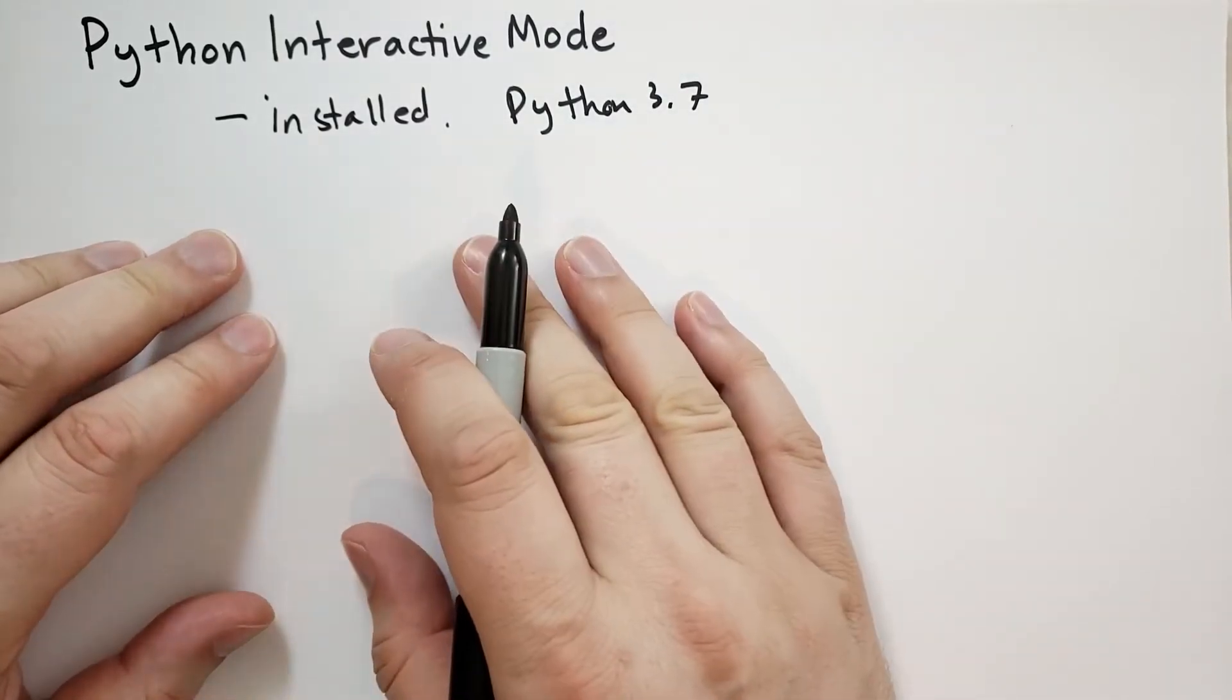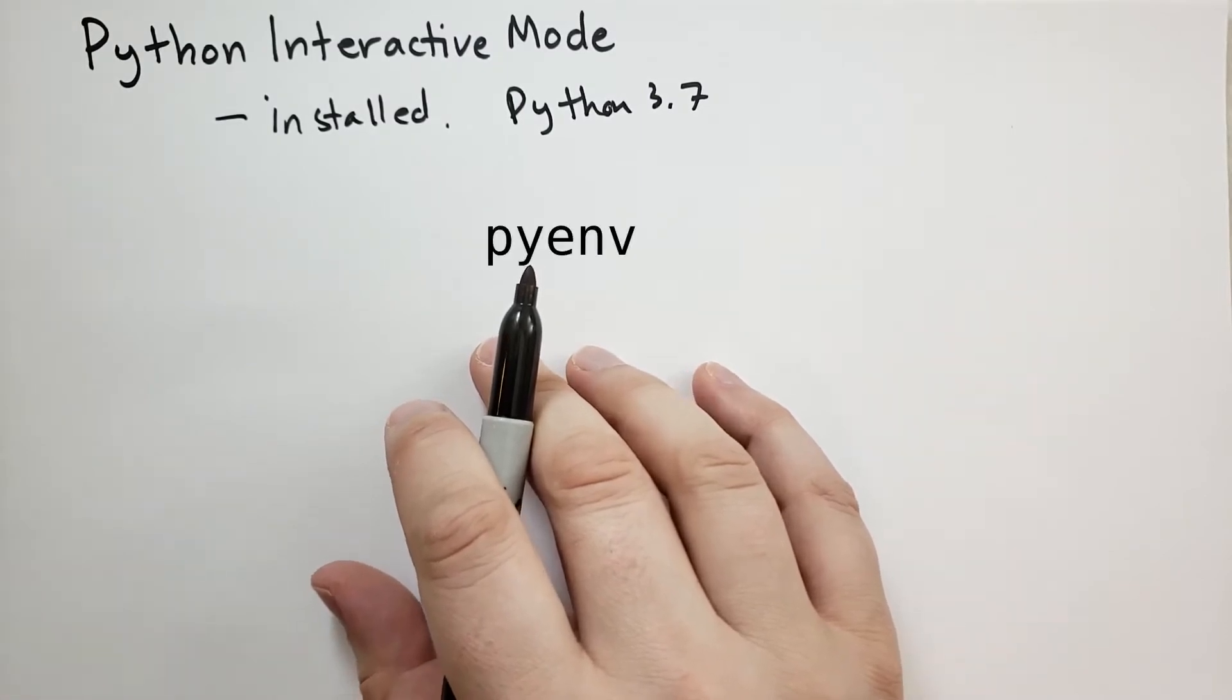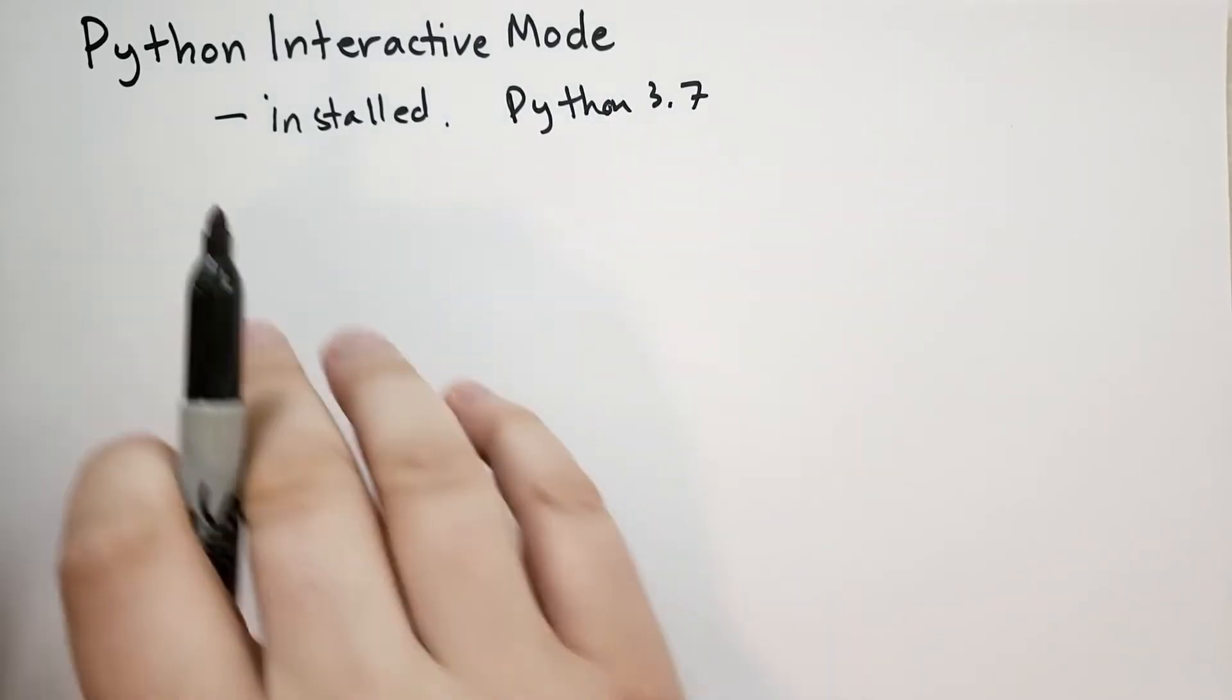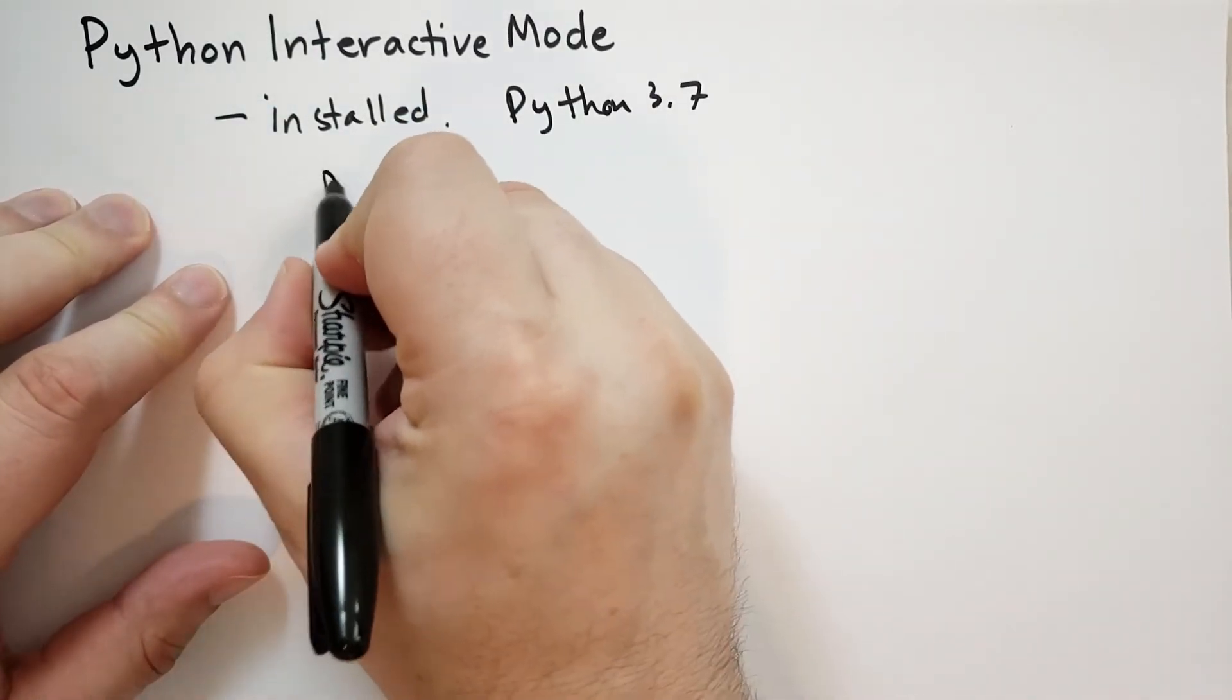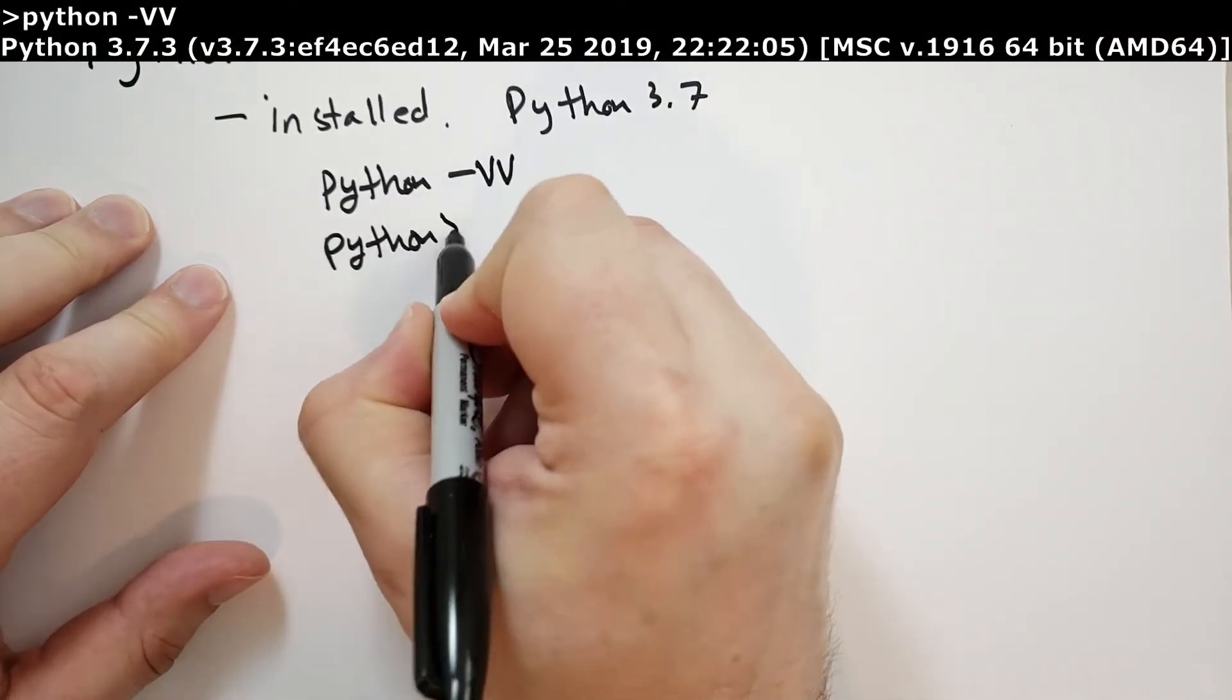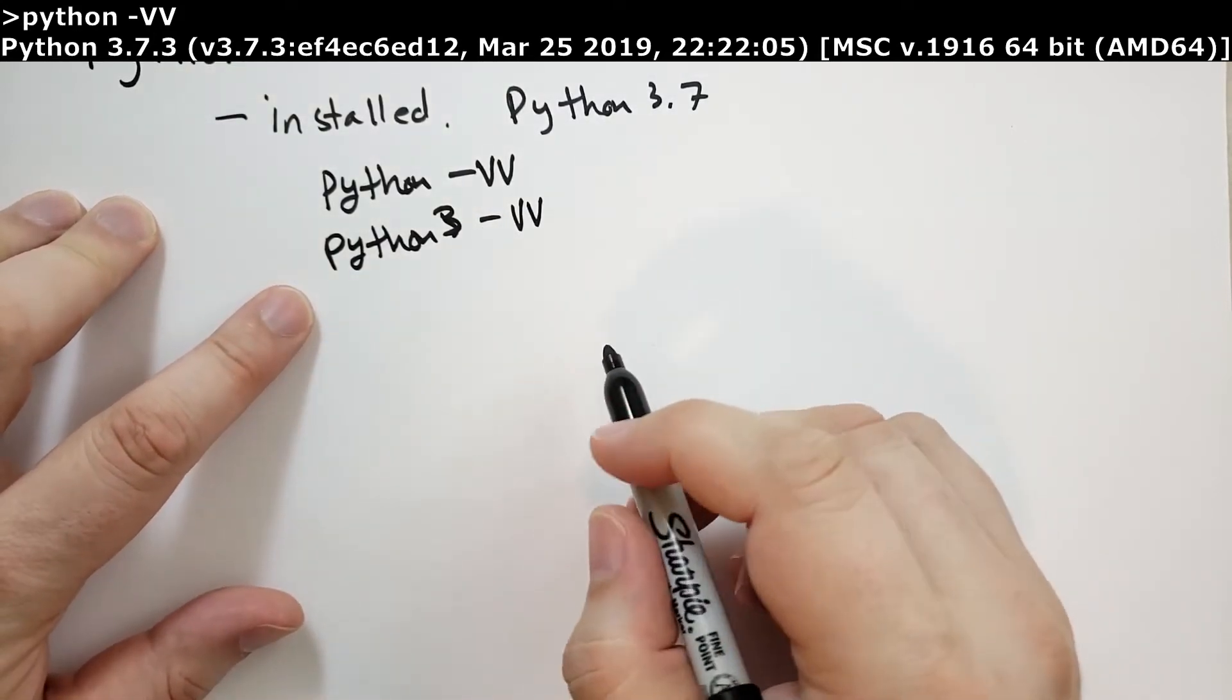If you're on Linux or Mac OS, you want to use a program called PyEnv to manage your Python versions without interfering with your operating system. Otherwise, your operating system might have Python 3.7 installed by default. Likely it doesn't, so check your operating system, see what version it has. When you run the command Python dash VV or Python 3 dash VV, it should say something like Python 3.7.